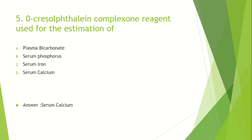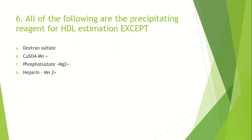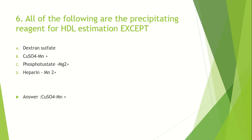All of the following are precipitating reagents for HDL estimation except: Option A: Dextran Sulphate. Option B: Copper Sulphate. Option C: Phosphotungstate/Magnesium. Option D: Heparin/Manganese. The answer is Copper Sulphate. In HDL estimation, using today's homogenous enzymatic assays versus heterogeneous assays — Dextran Sulphate, Phosphotungstate, Magnesium complex, and Heparin-Manganese complex are valid precipitating reagents.